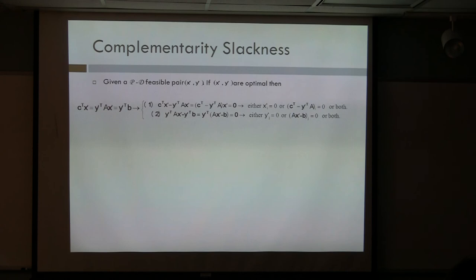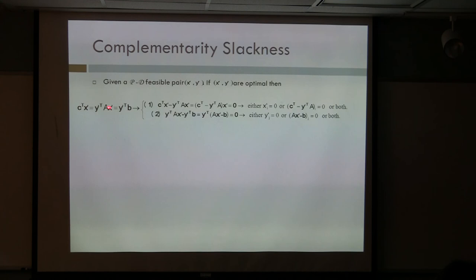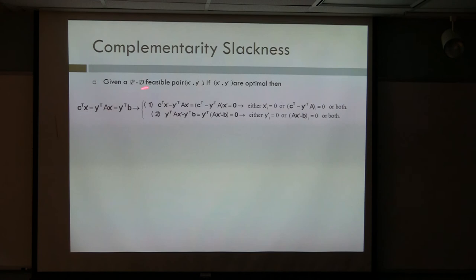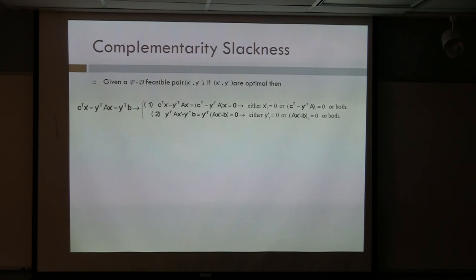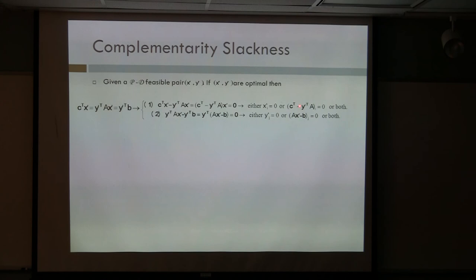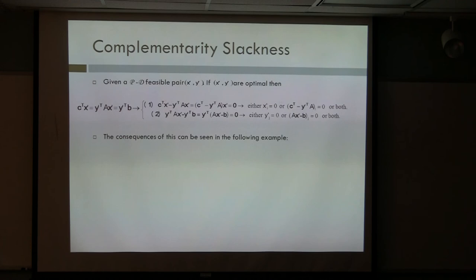The case we really care about is where they're both bounded convex regions. With that, if we have an optimum for the primal problem and an optimum for the dual problem, we have what's called complementarity slackness. Moving everything over on one of the equations gives one condition, and on the other gives a second. We have an inner product relationship: either the coordinate in the primal space has to have value zero, or the inequality in the dual problem has to have value zero. That inner product always has to be zero. Similarly, a dual coordinate has to be zero or the primal inequality has to be zero.